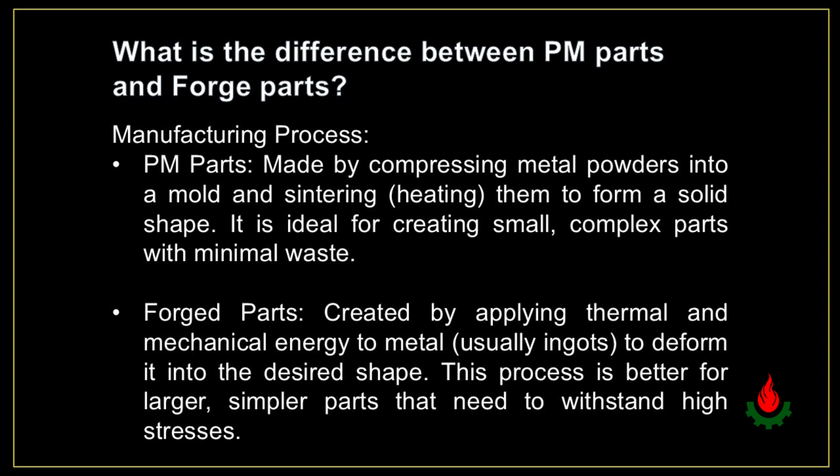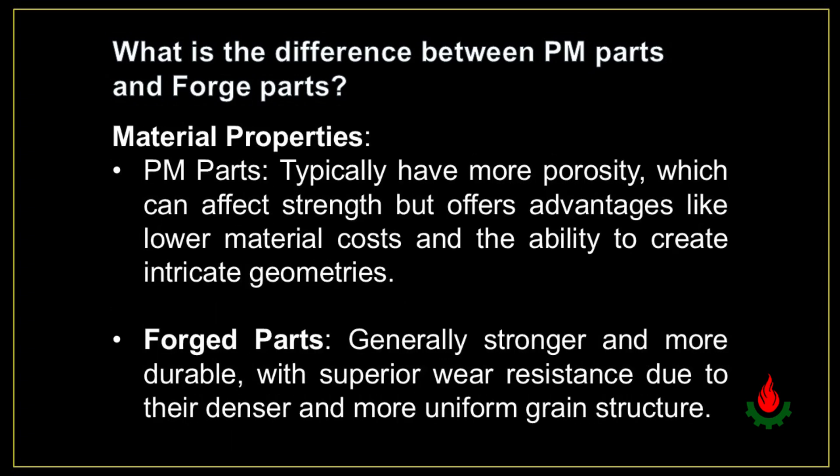PM is ideal for creating small, complex parts with minimal waste. Forged parts are created by applying thermal and mechanical energy to metal, usually ingots, to deform it into the desired shape. This process is better for larger, simpler parts that need to withstand high stresses.